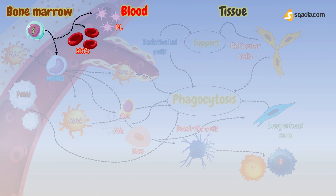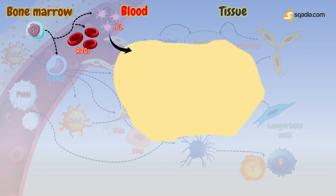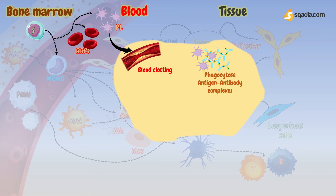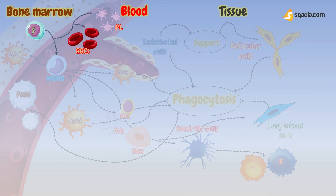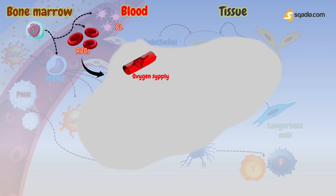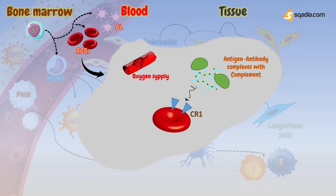Other than these phagocytic cells, there are some other cells that are not mainly phagocytic, but under certain conditions phagocytosis may occur inside them. Blood platelets, although primarily involved in clotting, are able to phagocytose antigen-antibody complexes and can also secrete some cytokines, such as transforming growth factor beta, TGF-beta. Red blood cells, mainly responsible for oxygen supply throughout the body, also sometimes take part in phagocytosis. Antigen-antibody complexes that have bound complement can become attached to red blood cells via the CR-1 receptor, which then transport the complexes to the liver for removal by macrophages. This is sometimes referred to as immune adherence.